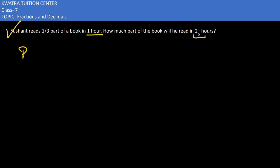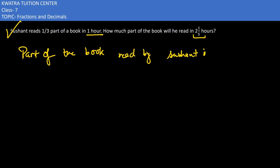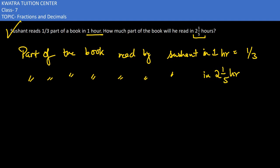First of all, what do we write? Part of the book read by Sushant in 1 hour. How much did he read? 1/3. Now we will find which part of the book is read by Sushant in 2 1/5 hours.